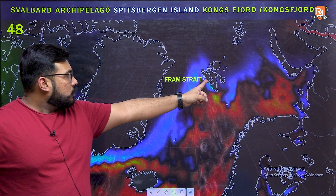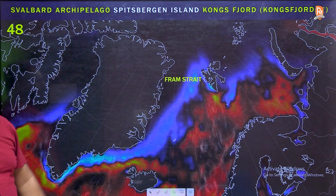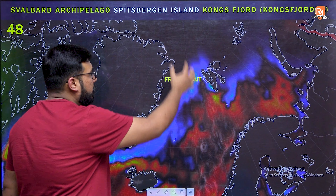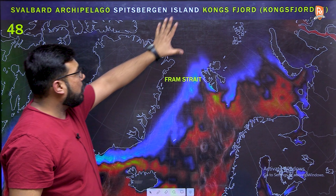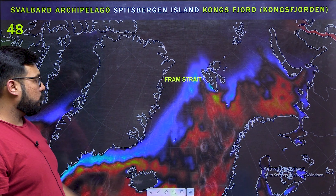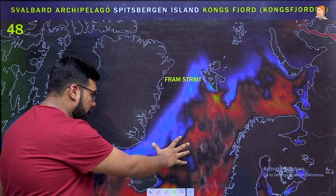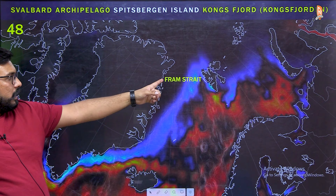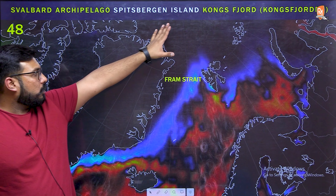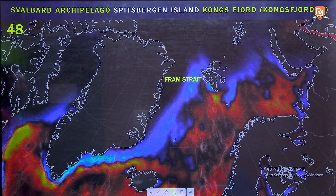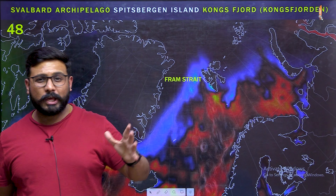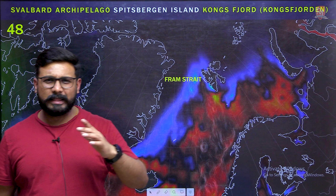The water body between Greenland and Svalbard is the Fram Strait — a narrow water channel connecting the North Atlantic Ocean and the Arctic Ocean. This is an important entry. That was all for Part 2 of this map series. More important entries will be covered in upcoming videos. Thank you so much.